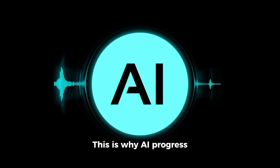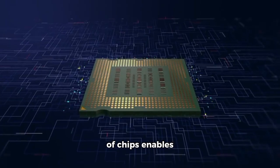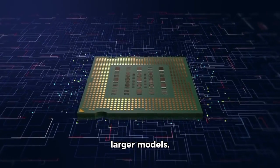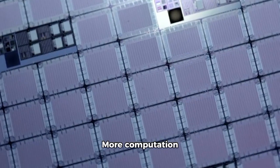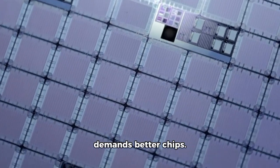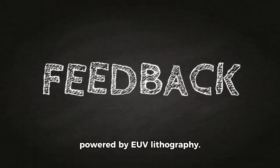This is why AI progress feels exponential. Each new generation of chips enables larger models. Larger models demand more computation. More computation demands better chips. It's a feedback loop powered by EUV lithography.